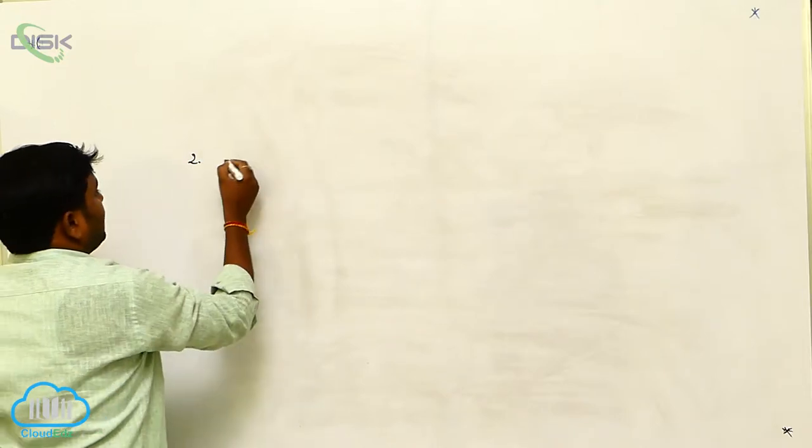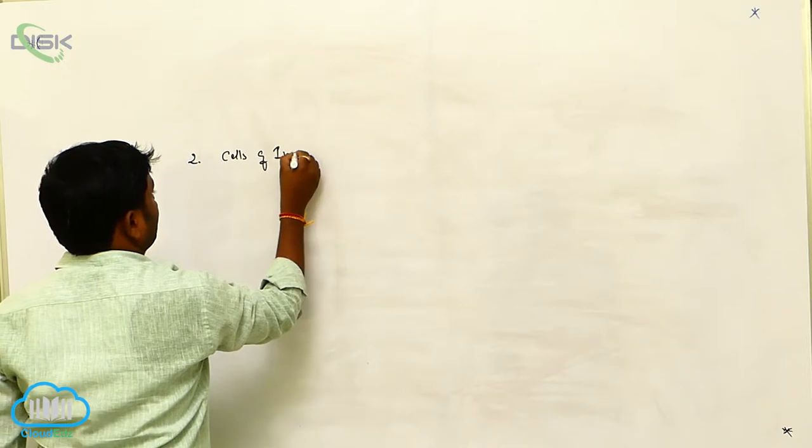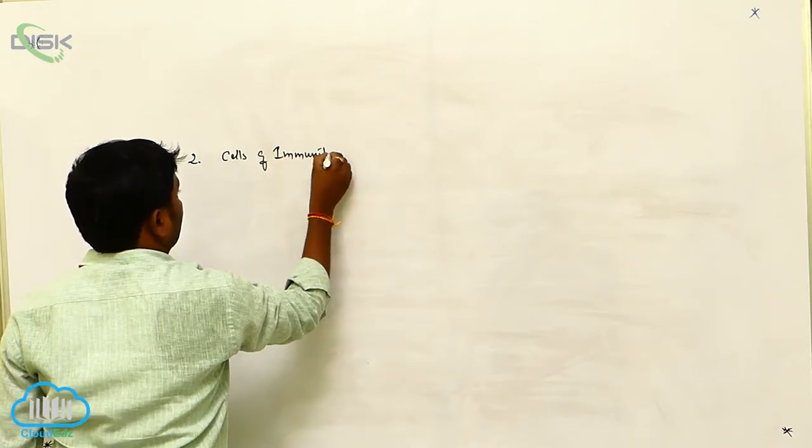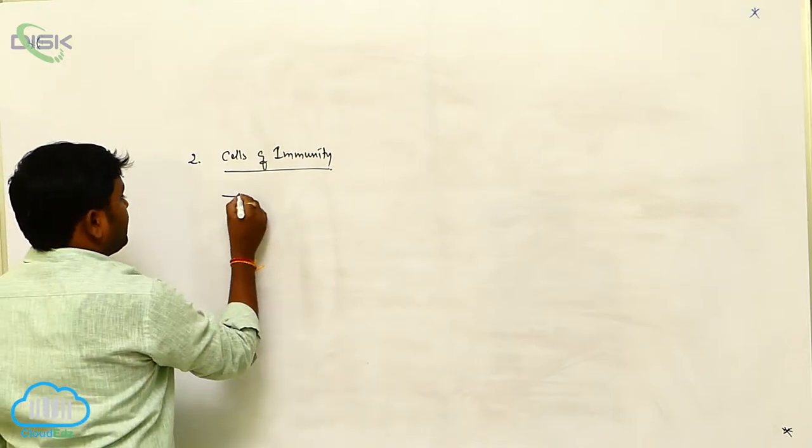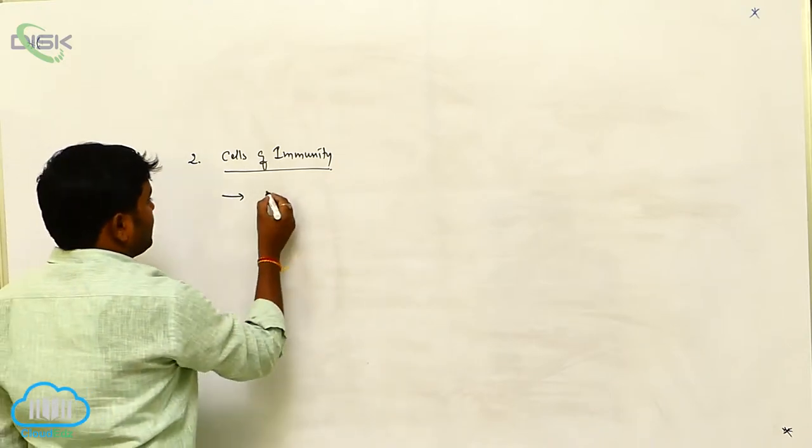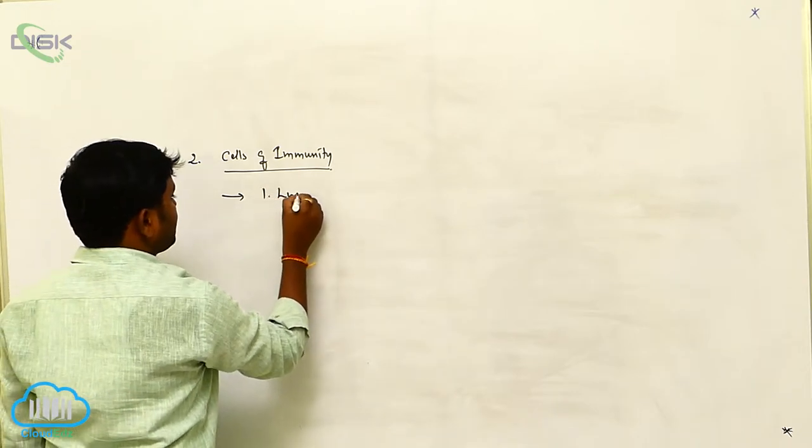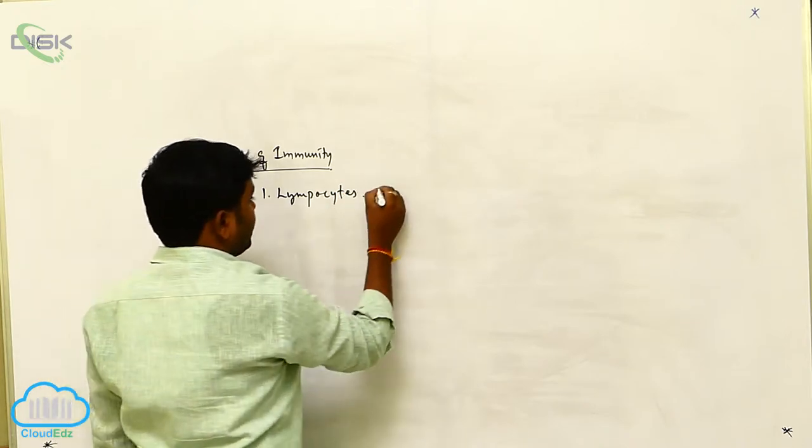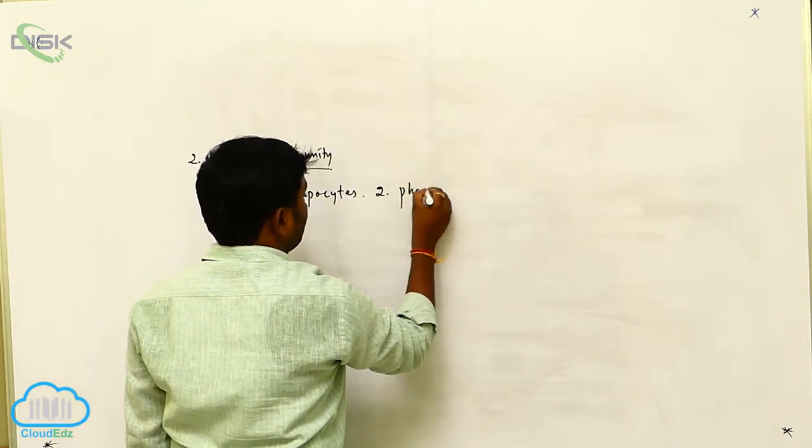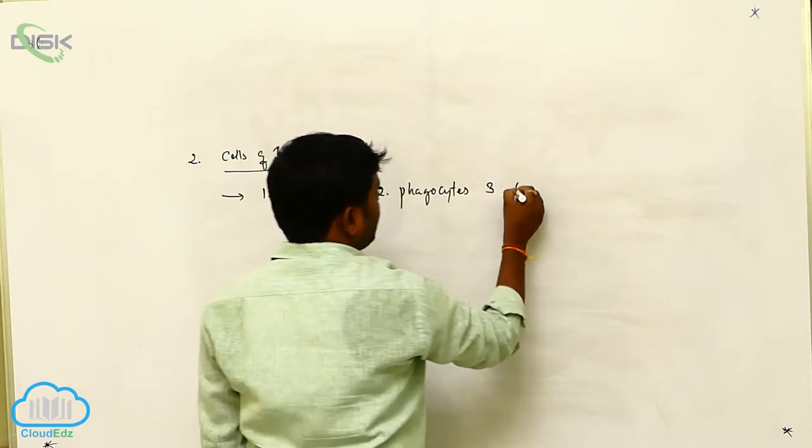The basic concept is cells of immunity. There are three types of cells present: first one is lymphocytes, second one is phagocytes, and third one is axillary cells.